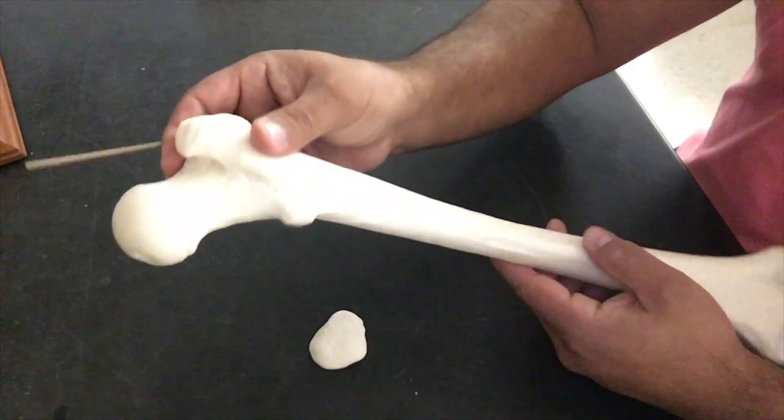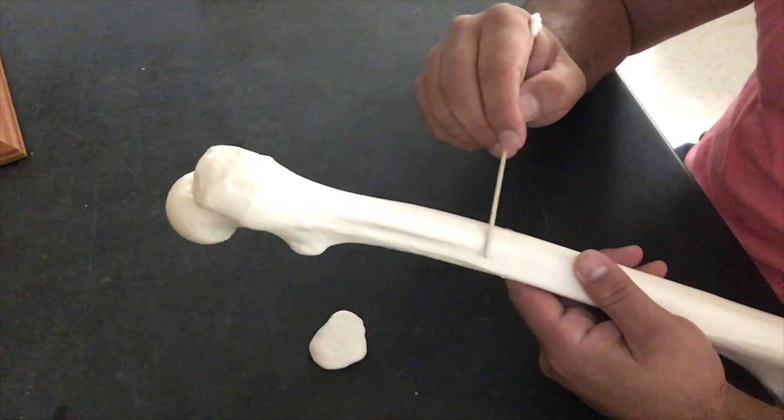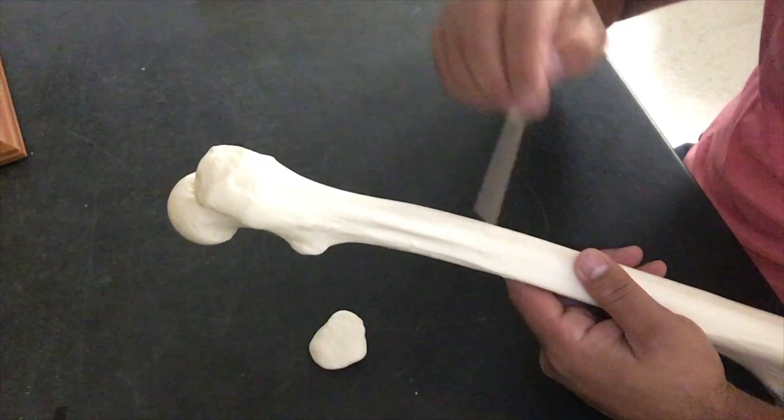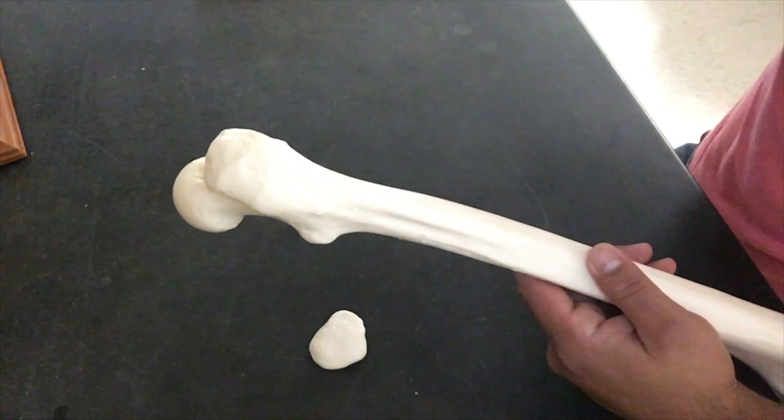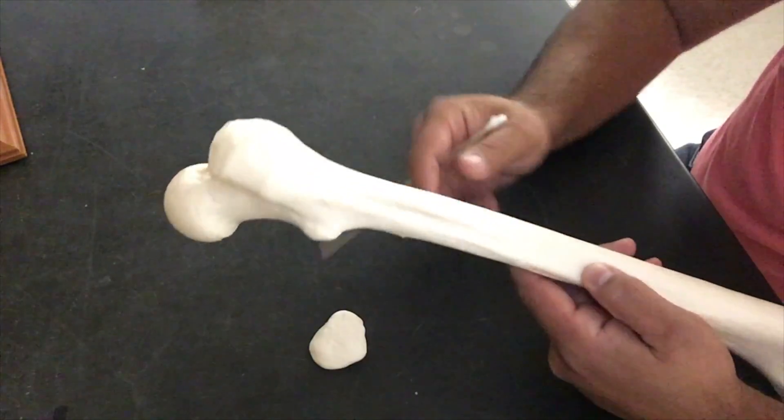And since we're on this aspect right here, I'm going to try to point it out, but right here, hopefully the shadow will allow you to see this. This tuberosity is our gluteal tuberosity.